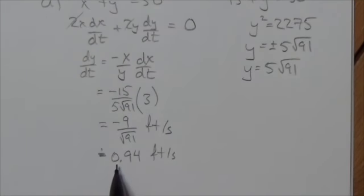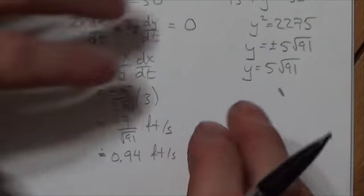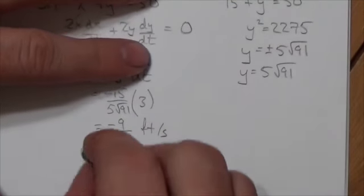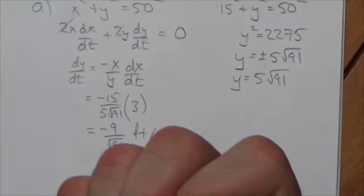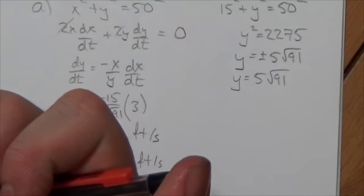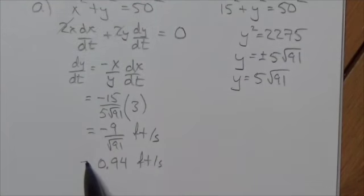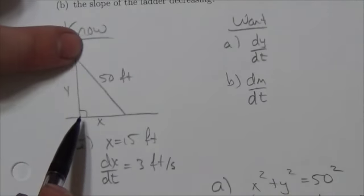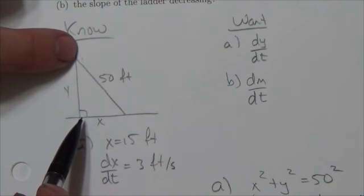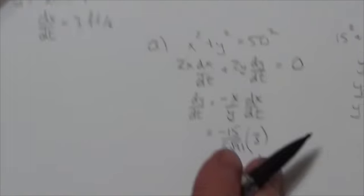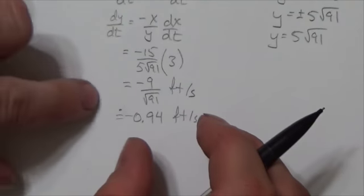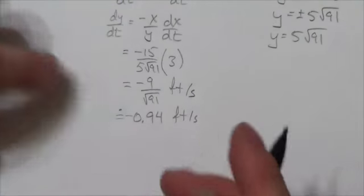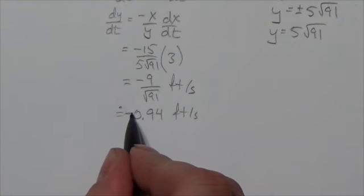Now, does it make sense that the value should be negative? Yeah. In fact, that's a great question because I didn't write it as negative. And it should be negative. Why should it be negative? Well, because the value of y here is getting smaller. The value of this variable here, as the ladder slides out here, this is getting smaller and smaller. Because the value of the variable is getting smaller, its change should be negative.